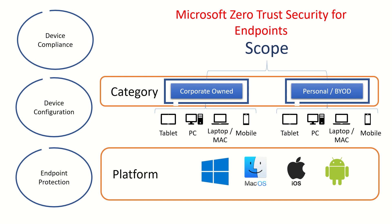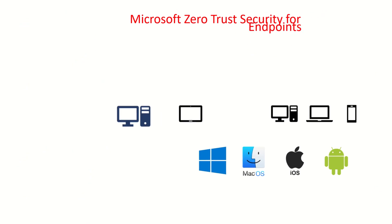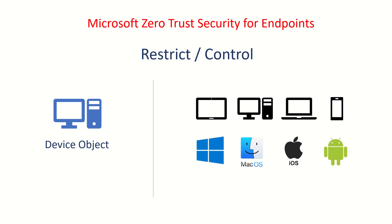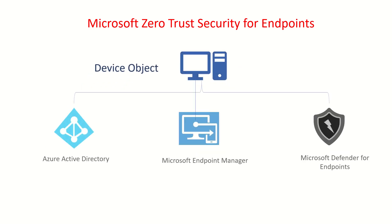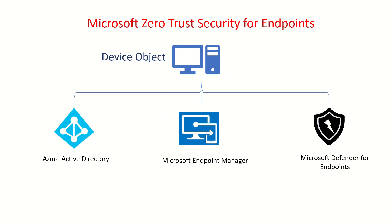Before you manage any device, the first thing you need is the device object — the device identity itself. When you join a machine to your AD, a computer object is created in the AD and used to map all the policies. The same concept applies when using cloud-native solutions. For Microsoft, those are Azure AD, Endpoint Manager, and Windows Defender for Endpoints.